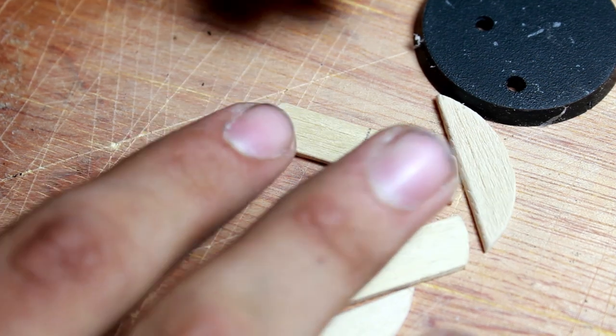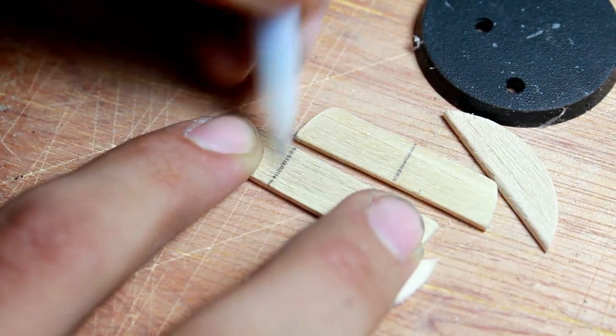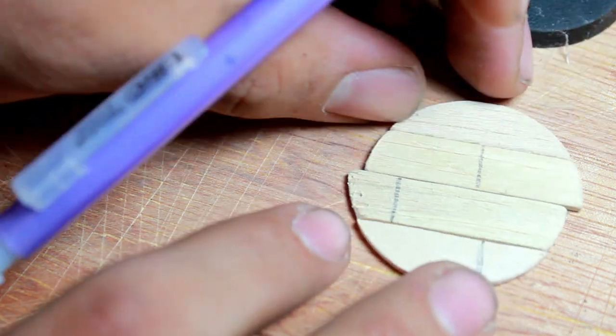Now that I've got my popsicle sticks cut out, I wanted to make them look a little bit more like the irregular planks on a ship, and so I did some cross cuts.